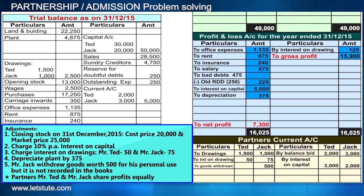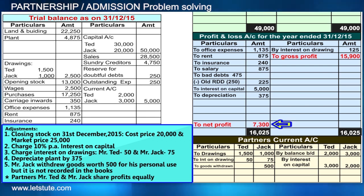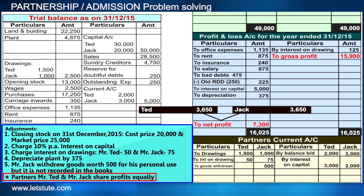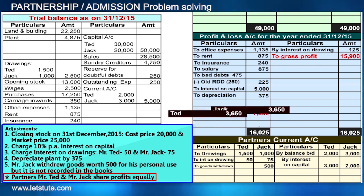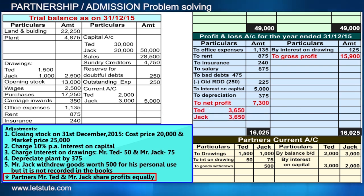Now comes the closing part. First we close the trading account — this gives us the gross profit, which is transferred to the profit and loss account. After totaling, we arrive at the net profit. We can then show the bifurcation of this profit between the partners distributed in their profit sharing ratio. They share profits equally, so that is 3,650 each, which is also shown in the partners' current account.